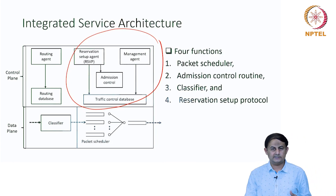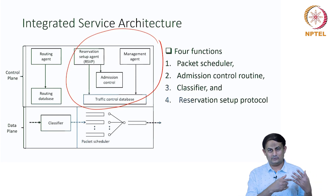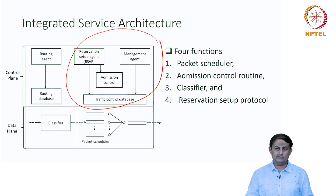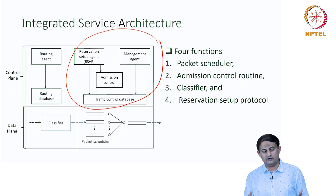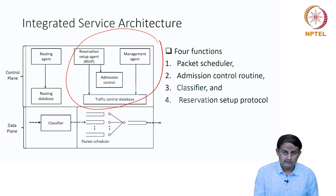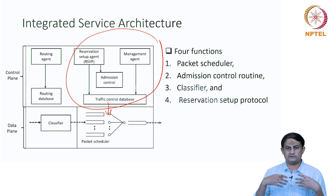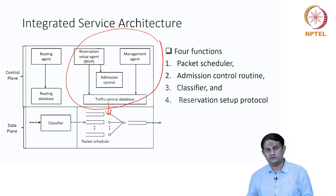The traffic control database is consulted by the data plane to make certain transmission choices. You have a traffic classifier which identifies what to do with each packet — a set of rules determines whether to forward or drop a packet, with priority and other criteria. In the data plane there is also a packet scheduler, which picks packets in a certain order from different queues and schedules them for transmission. The input for scheduling decisions comes from the traffic control database.